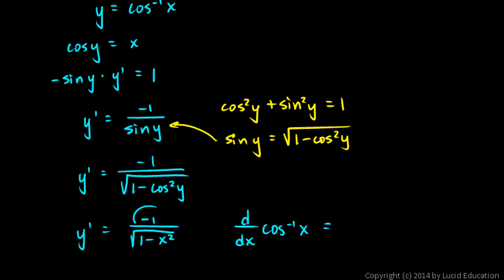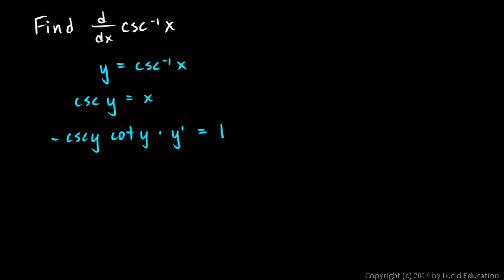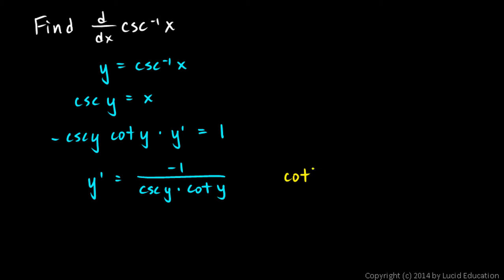Now for the inverse cosecant. We set y equal to the inverse cosecant of x and find dy/dx. Taking the cosecant of each side gives cosecant y equals x. Differentiating implicitly, the derivative of cosecant is negative cosecant cotangent, so the left side becomes negative cosecant y times cotangent y times y prime, and the right side is 1. Solving for y prime gives negative 1 over cosecant y times cotangent y.